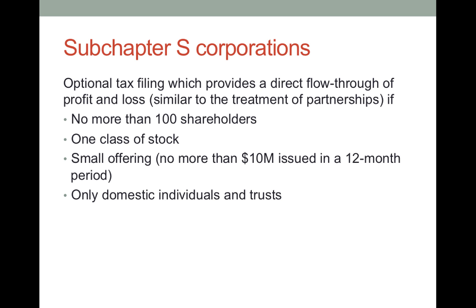It also allows shareholders to write off directly any business loss, which can be an enormous advantage. Who is eligible for subchapter S treatment? There need to be no more than 100 shareholders. As a caveat, don't take any actions based solely on the information I'm giving you now because these laws change — tax code changes often. The number was originally 35 shareholders; the last time I checked it was 100. Always check to make sure these are the current numbers.